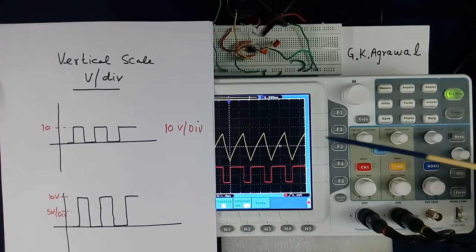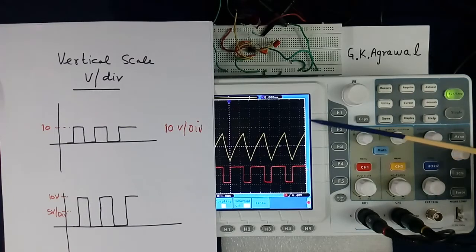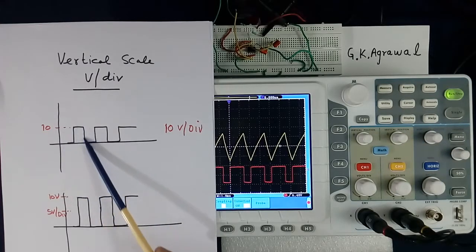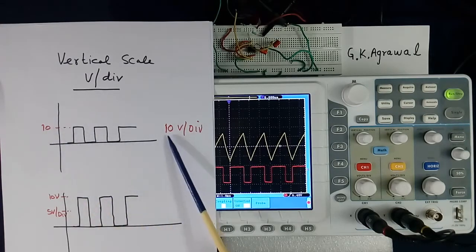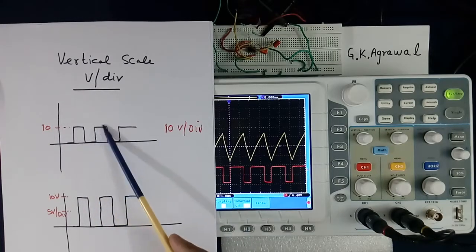Now suppose we set 10 volt per division. What does it mean? Between this and this point, 10 volt will come. Scale will be 10 volt for this distance. Now suppose I have one signal here, and this is 10 volt, and I have set 10 volt per division. So within one division, the signal will come.